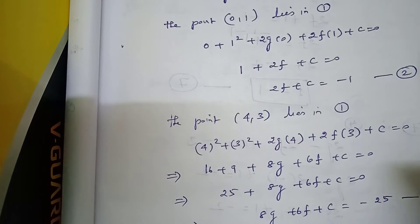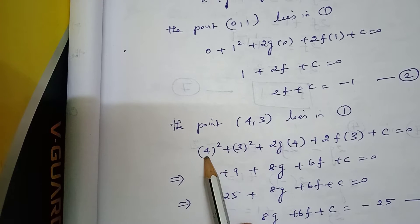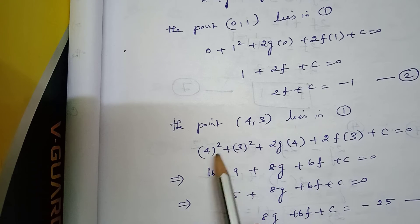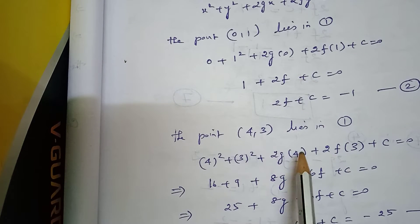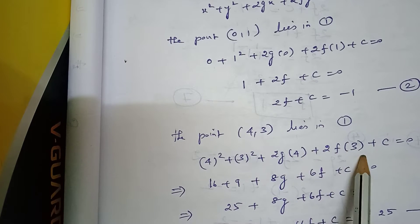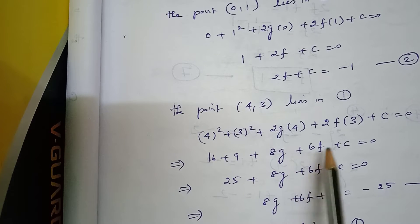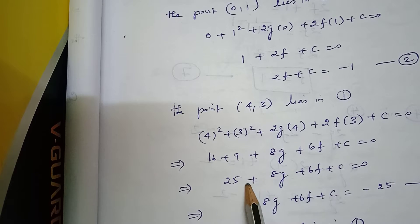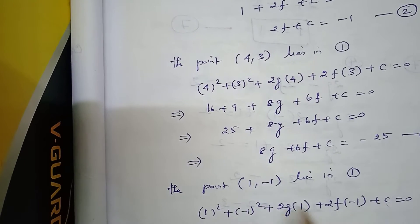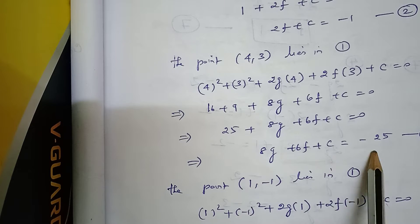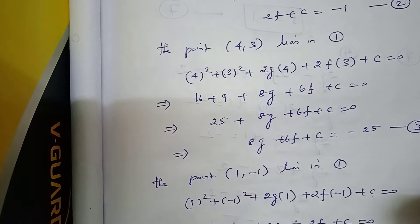Similarly, the second point (4, 3) lies on equation number 1. With x = 4, y = 3: 4² + 3² + 2g(4) + 2f(3) + c = 0, giving 16 + 9 + 8g + 6f + c = 0, so 25 + 8g + 6f + c = 0. Therefore 8g + 6f + c = -25, which is equation number 3.